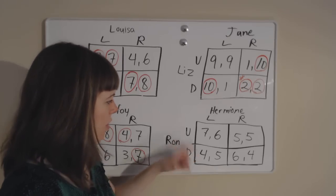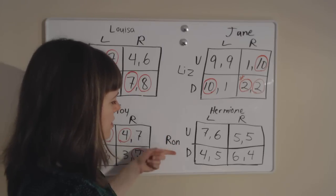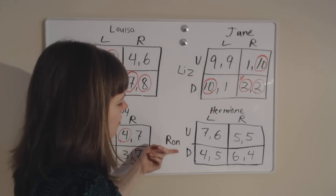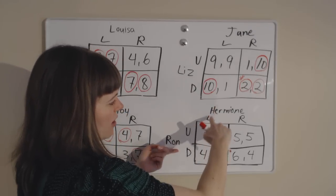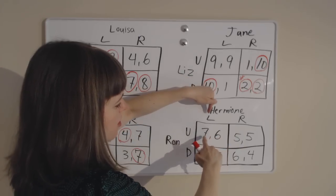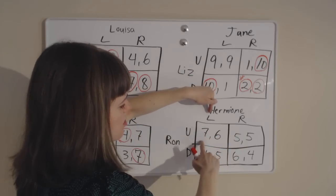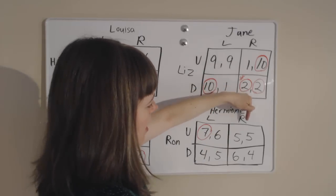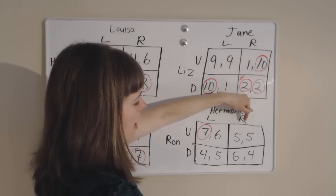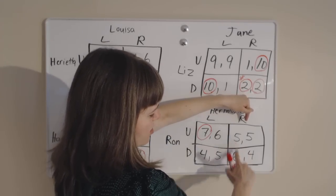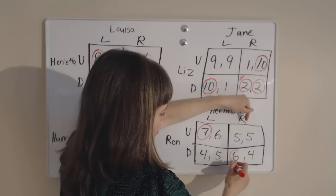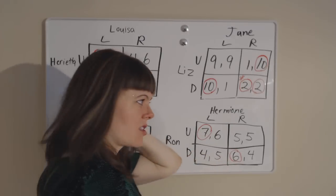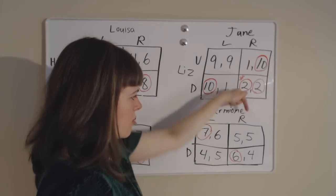Over here we have Ron and Hermione playing a game. We'll start with Ron's perspective and check Hermione's strategies. If Hermione goes left, Ron is choosing between the 7 and the 4 — Ron likes the 7. If Hermione goes right, Ron is choosing between the 5 and the 6, and he would like to choose the 6 — going down as his best response to Hermione choosing right.